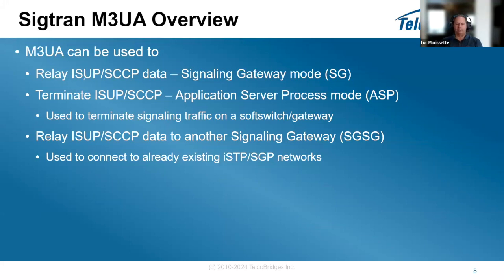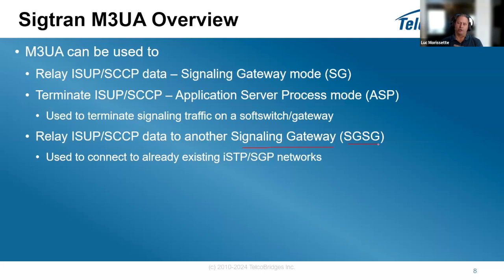M3UA can be used to relay ISUP and SCCP data — as a signaling gateway — or to terminate ISUP, which we saw as ASP mode. This is typically done by a soft switch, gateway, or media gateway controller. You can also relay ISUP and SCCP to another signaling gateway — internally called signaling gateway to signaling gateway mode — which you use to connect to an existing ISTP or STP network.